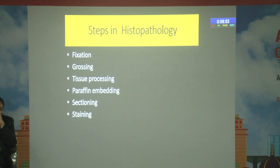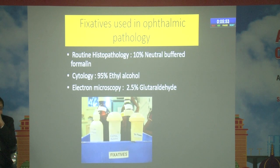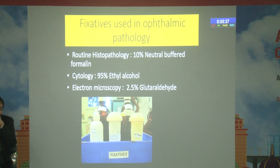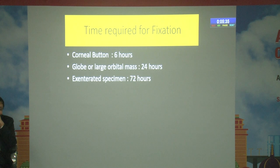In the histopathology department, we do fixation, grossing, tissue processing, paraffin embedding, sectioning, and finally staining, and then examine under the microscope. The fixative used in ophthalmic pathology and routine histopathology is 10% neutral buffered formalin. For cytology we use 95% ethyl alcohol, and for electron microscopy, 2.5% glutaraldehyde. We are doing electron microscopy less and less nowadays.